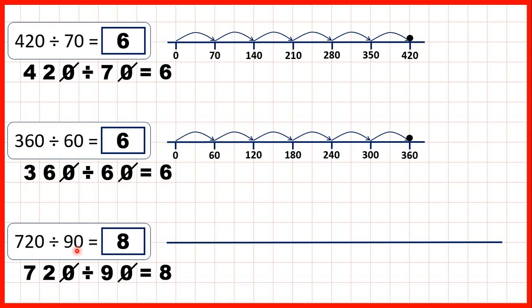Now to divide by 90, we could count up in steps of 90 until we reach our dividend. So we have 90, 180, 270, 360, 450, 540, 630 and then the eighth multiple of 90 is 720. And that's why 720 divided by 90 is 8.